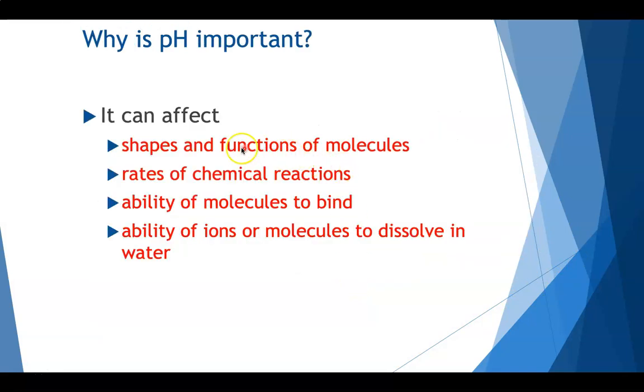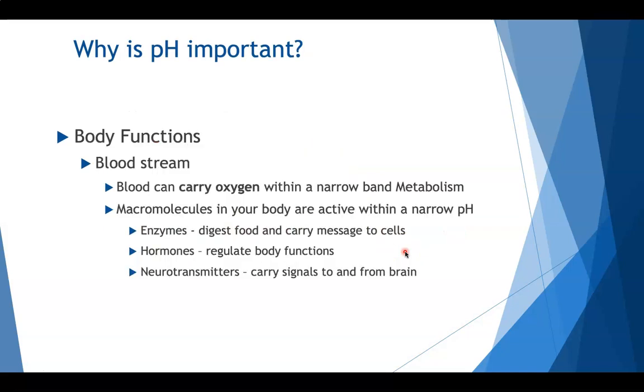pH is so critical because it's going to determine how our molecules function. It's going to affect the rate of our reactions, the ability of the molecules to bind, and also the ability of ions or molecules to dissolve in water. This is critical. We have a lot of bodily functions that work this way. So remember our blood carries our oxygen. So the moment we start changing that pH of the liquid, it can affect how different molecules can carry the oxygen or how hormones work or even things in your brain such as neurotransmitters.